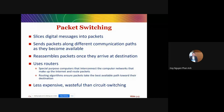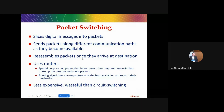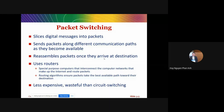Those smaller packages are then sent along different communication paths — the packages do not move on the same path but travel different paths online. When they reach the destination they will reassemble together, and your friend can receive the photo you sent. That's the operation behind our online activities.